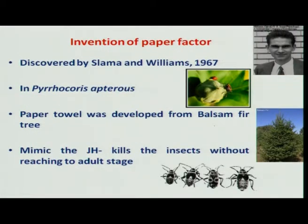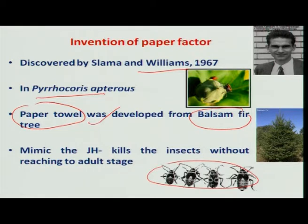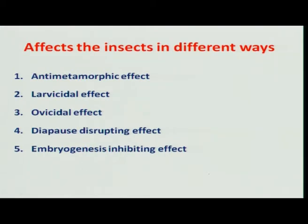This phenomenon was actually discovered accidentally. When Dr. William was working with one insect, the pyrrhocoris bug, while he was rearing it, he came across the mortality of the pyrrhocoris bug. He afterwards understood that a particular chemical was involved in the mortality of these insects. He traced it out to a paper towel which was actually made from balsam fir tree, available in America, which contains this JH hormone. That killed the insect, and thereby different insect growth regulators and other juvenoids came into the market.